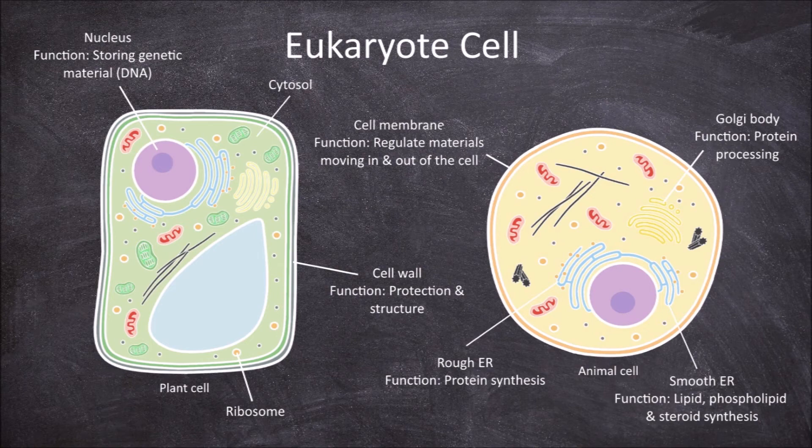Structures called the mitochondria are also found within the cell. They are double membraned organelles that function in the production of energy in the form of ATP.